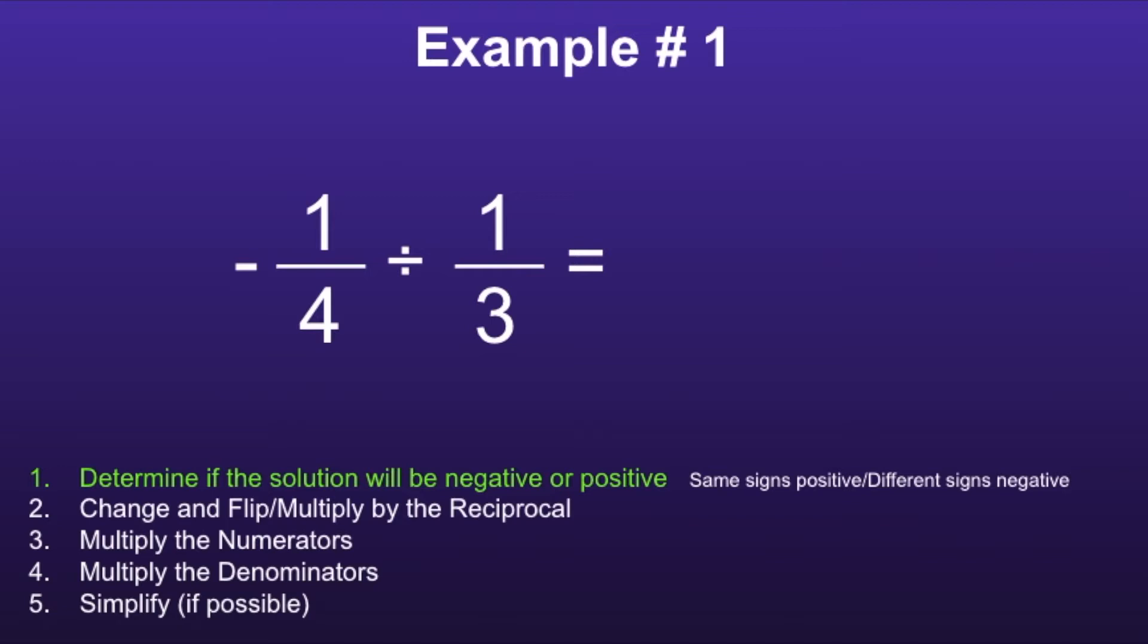If we look at the numbers, we can see that the first fraction is negative, but the second fraction is positive, which means they have different signs. So we will use the phrase different signs negative to determine that the solution will be negative.